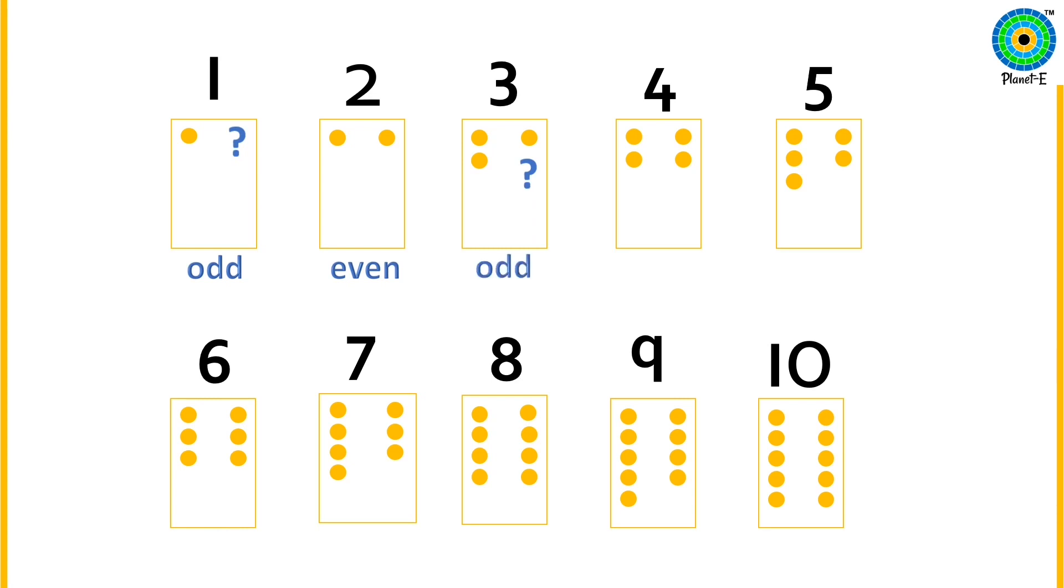Now, we will reflect on every number one by one to check if all the dots have a friend. If each dot has a friend, the number is even. If any dot does not have a friend, it is an odd number.